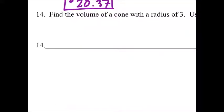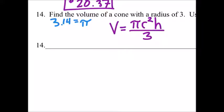Find the volume of a cone with the radius of 3. We're going to use 3.14 as pi. Let's look at the formula for the volume of a cone. Volume of a cone would be pi r squared times the height, then we're going to divide that all by 3.